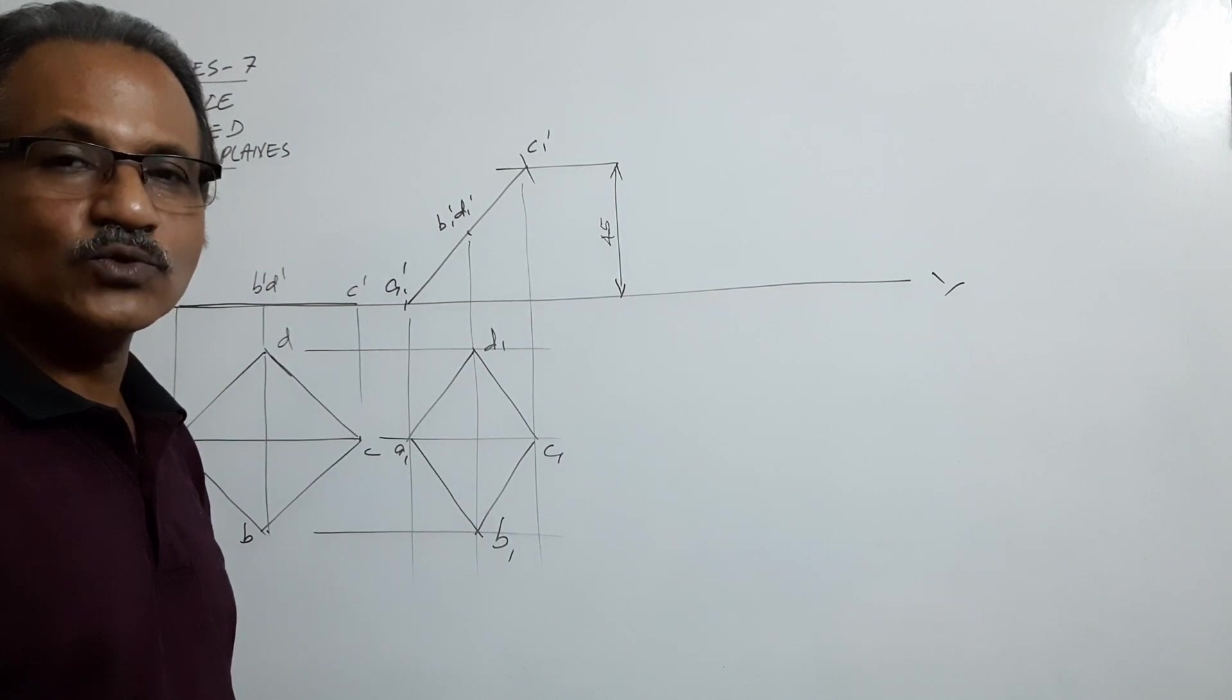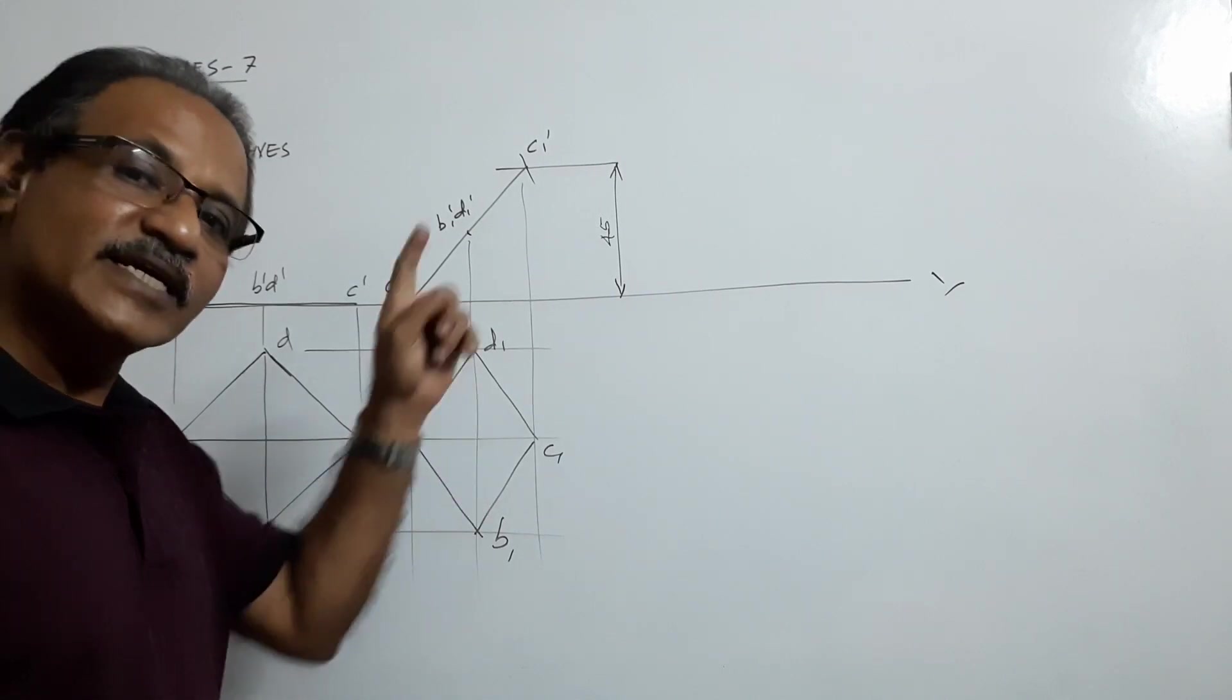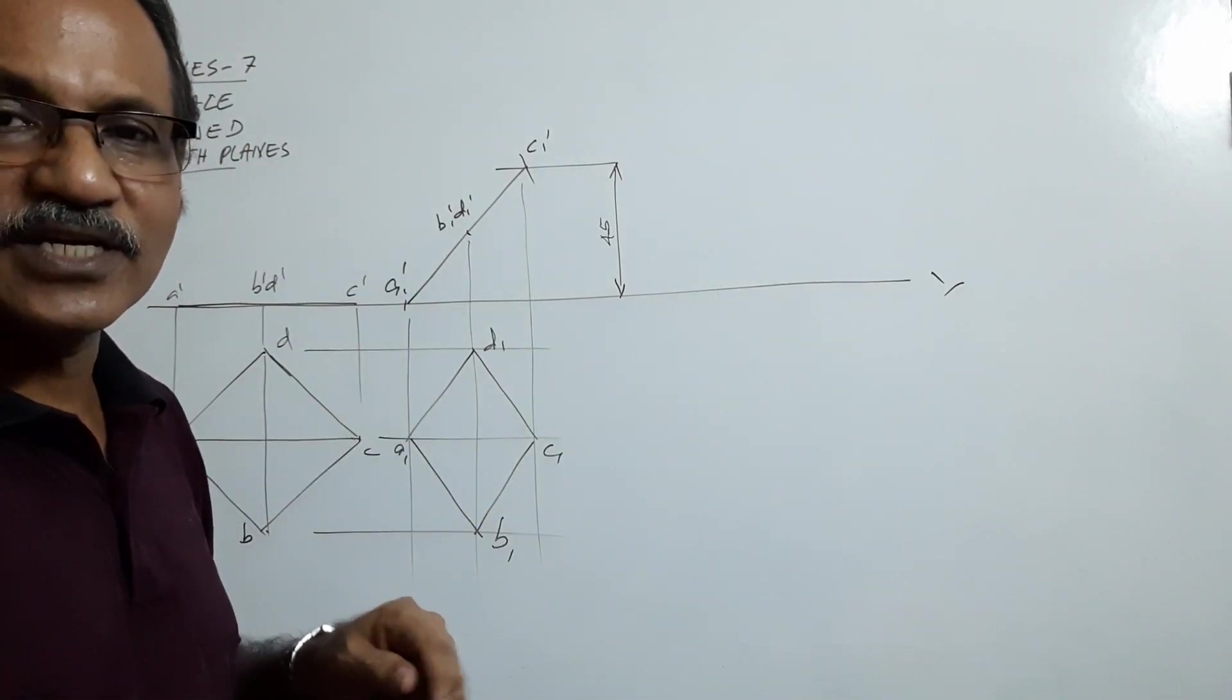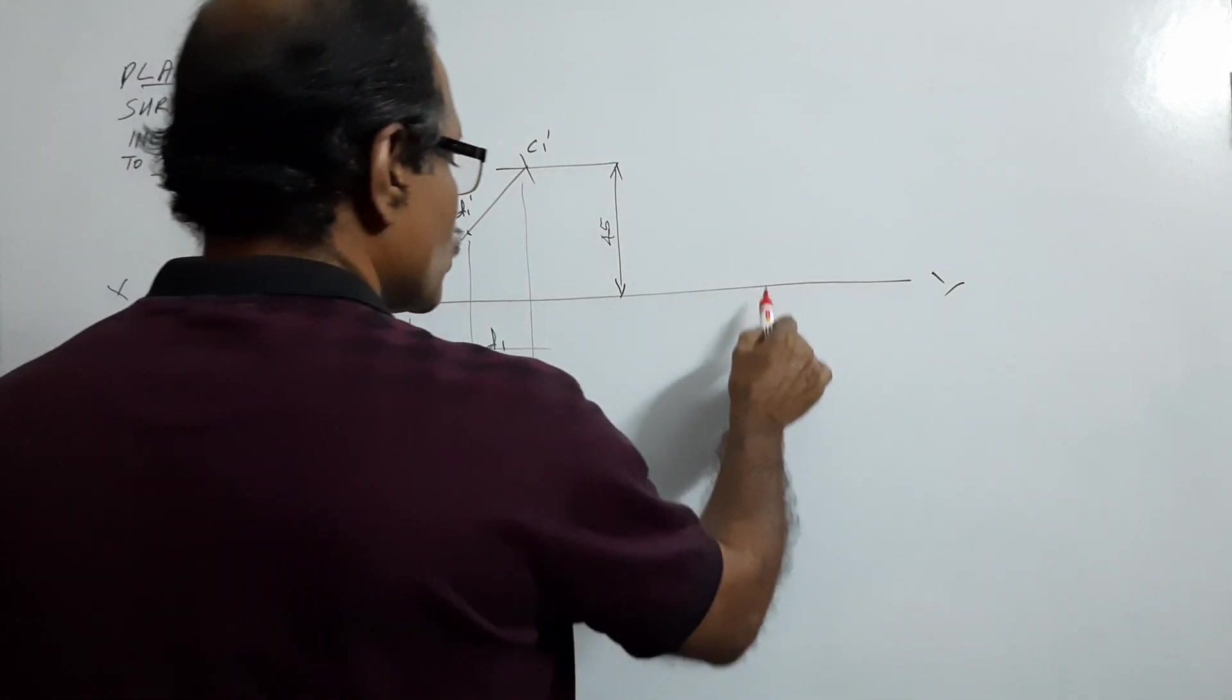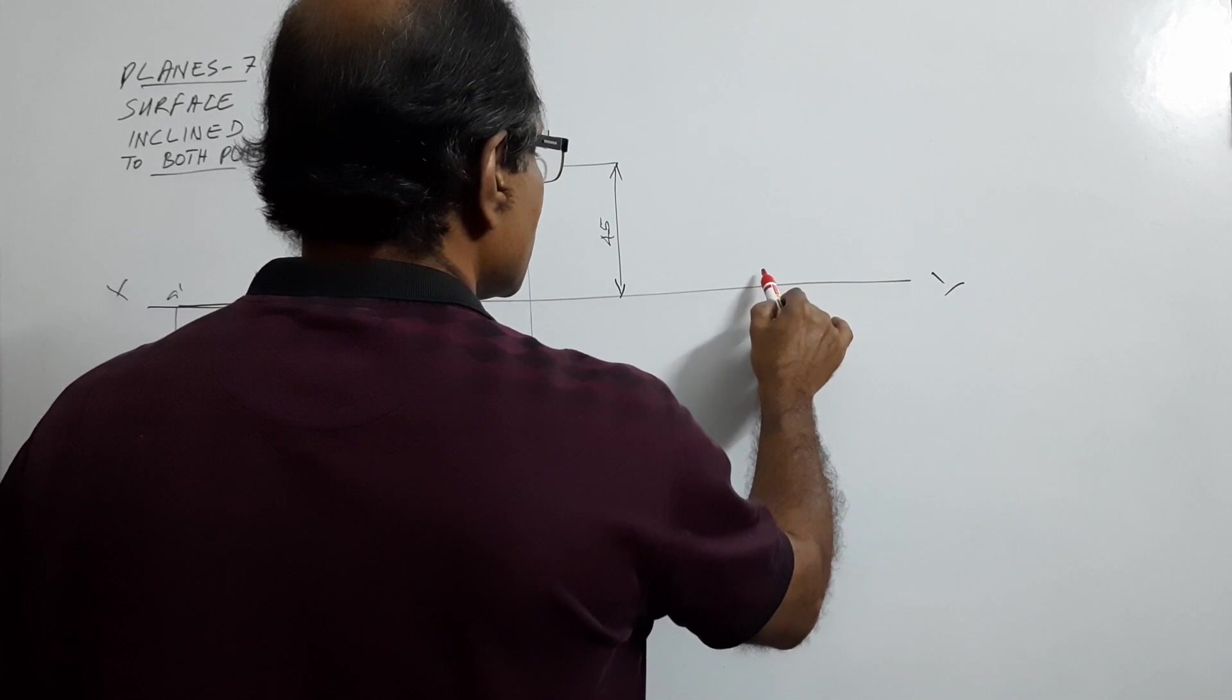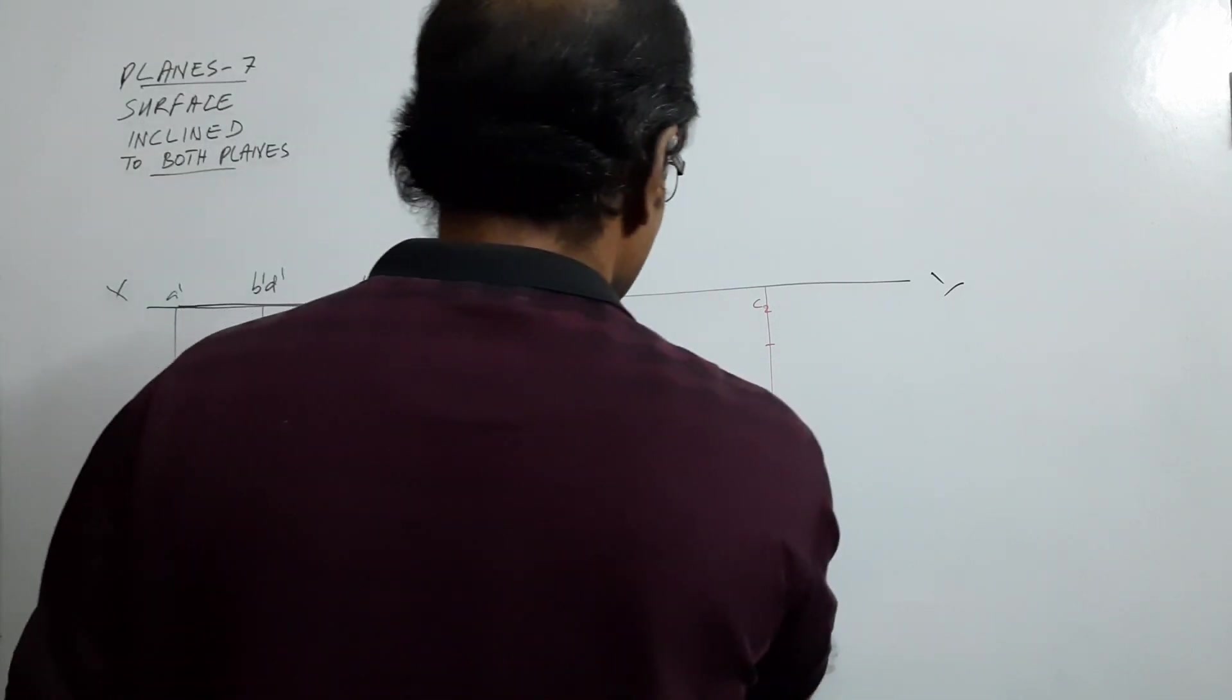C1 must come to XY line at C2. The opposite corner A is on the ground, the opposite corner C is on VP. That means its plan must be on XY line. Draw a vertical line, take this diagonal A2 C2 and mark. This is A2, this is C2, find its center.